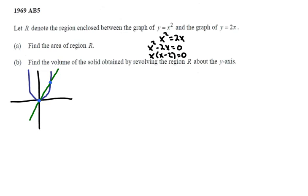So finding the area, that is the integral from 0 to 2. We always do top minus bottom, which gives us 2x minus x squared dx.